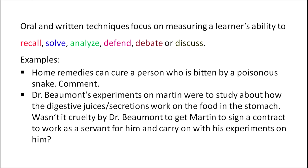In Dr. Beaumont's experiments, his experiments were conducted on a person named Martin to study how the digestive juices or secretions work on food in the stomach. Now, wasn't it cruelty by Dr. Beaumont to get Martin to sign a contract to work as a servant for him and carry on with his experiments? The learner would definitely analyze this statement, probably have a mental debate, a self-talk, and based on this, he would defend.